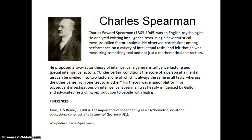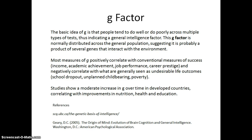He was heavily influenced by Galton and also advocated restricting reproduction to people that had high G. The basic idea of the G factor is that people tend to do well or do poorly across multiple types of tests, thus indicating there's something general going on with intelligence.